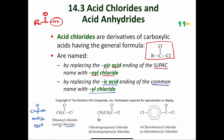When using common nomenclature, we use Greek lettering for substituents. So this molecule, using the IUPAC name, would be 3-bromopropanoyl chloride. But if I name it according to the common nomenclature system, I would call this carbon my alpha carbon and this carbon my beta carbon, so it becomes beta-bromopropanoyl chloride.